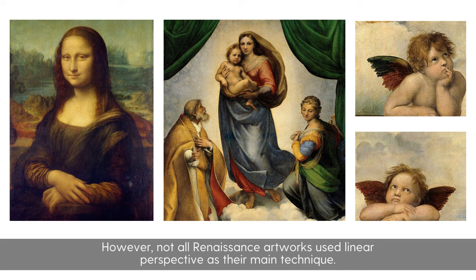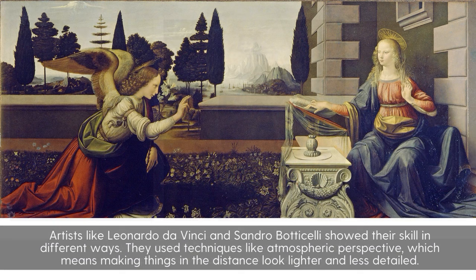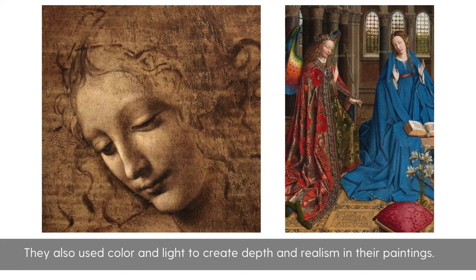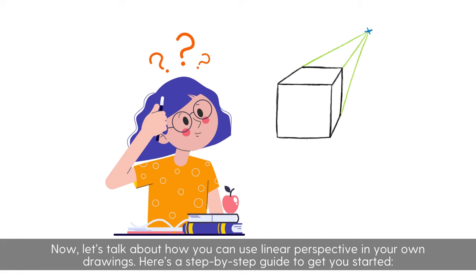However, not all Renaissance artworks use linear perspective as their main technique. Artists like Leonardo da Vinci and Sandro Botticelli showed their skill in different ways. They used techniques like atmospheric perspective, which means making things in the distance look lighter and less detailed. They also used color and light to create depth and realism in their paintings.